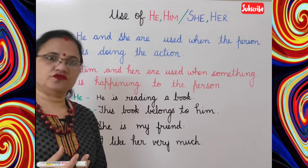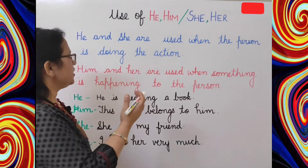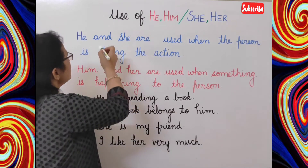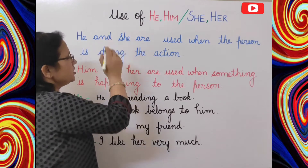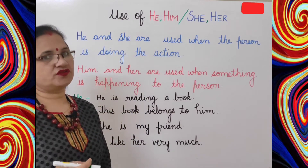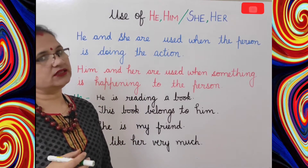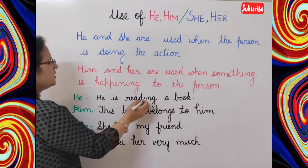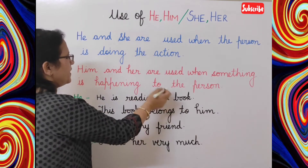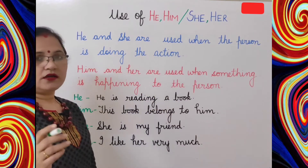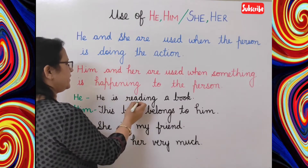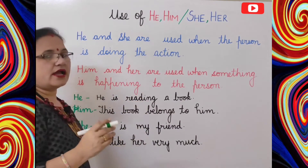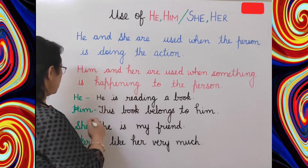Verb means action words. Him and her are used after the action words in the sentence, and he and she are used before the action words. For example, he is reading a book — woh book padh raha hai. Here the action word is 'reading', so he is used before the action word, before the verb.